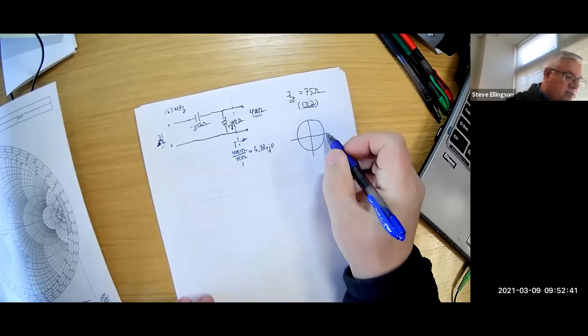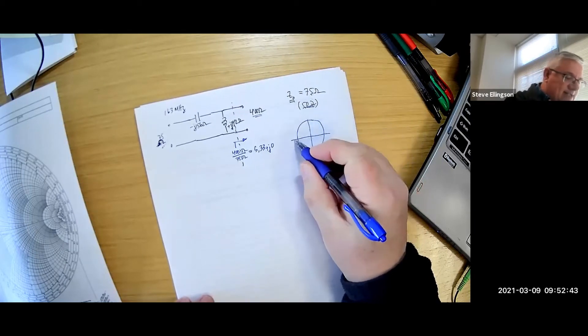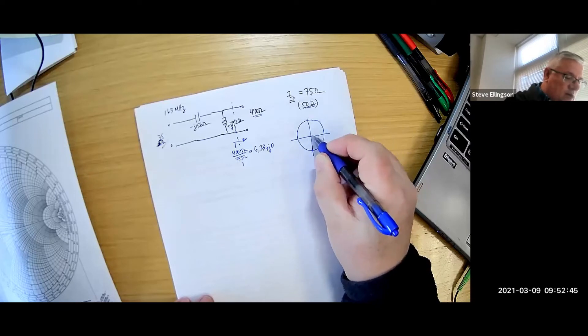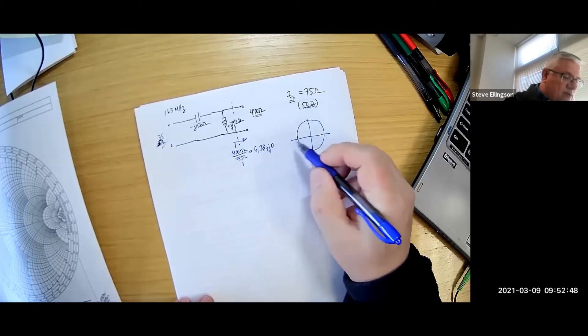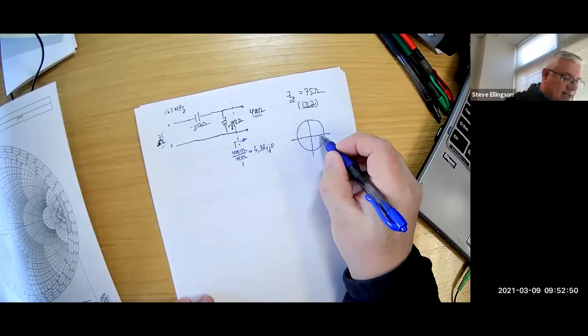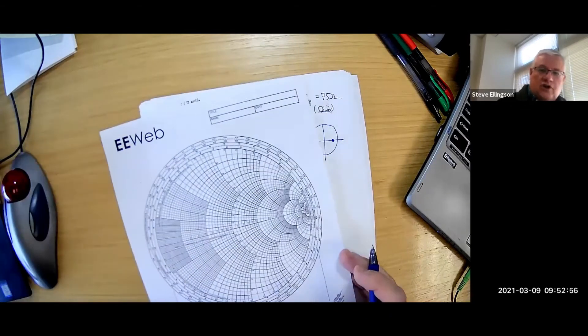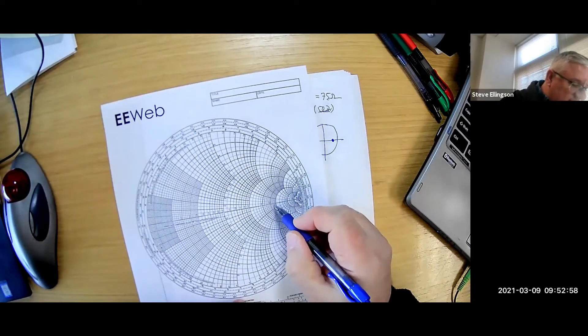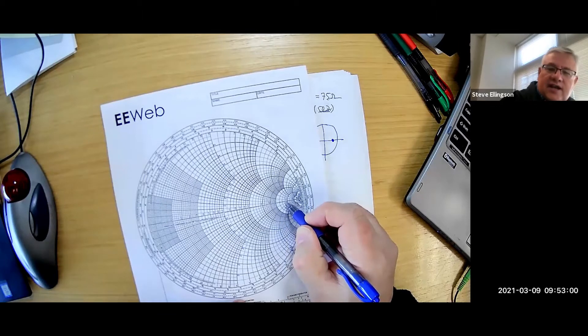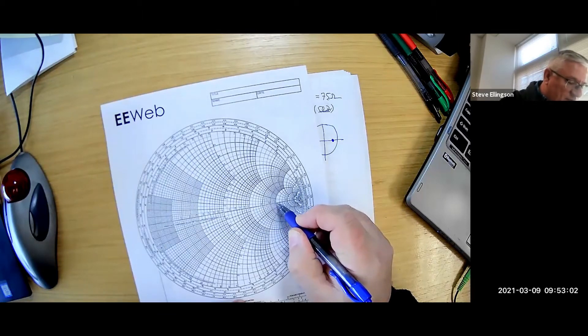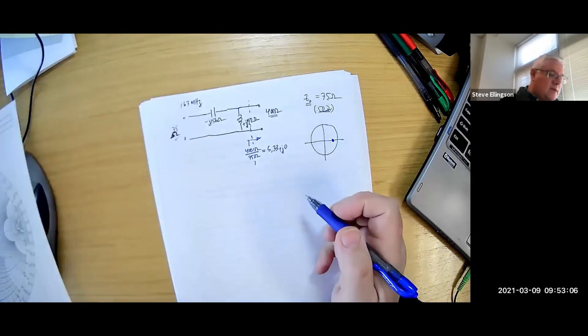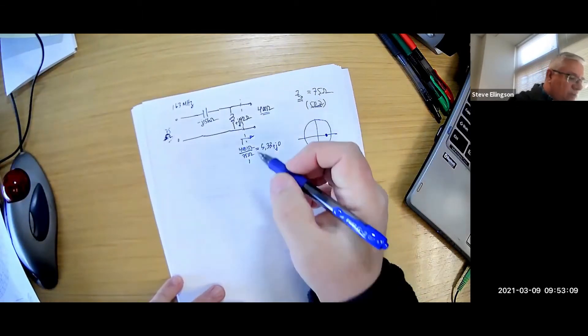There's my Smith chart. Well let's see, the reactance is zero so it's going to be somewhere along this horizontal line and 5.33 is going to be right about there. If we go back to the actual chart again you see this is five right here, this is 10 right here, so 5.33 would be right about here, so that's where that would look on the Smith chart.